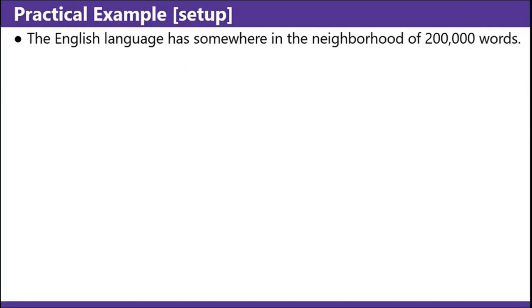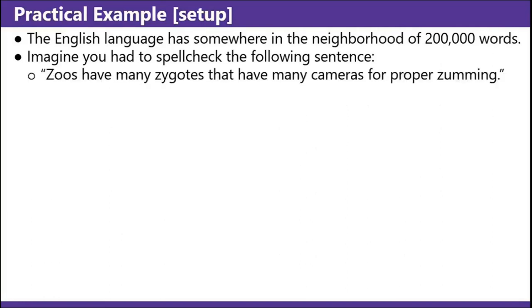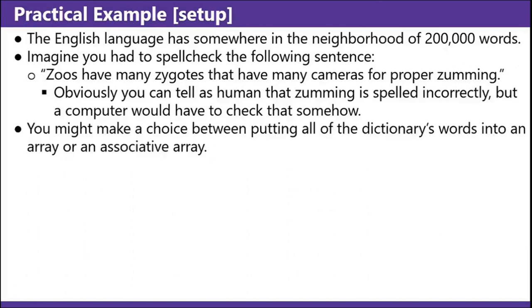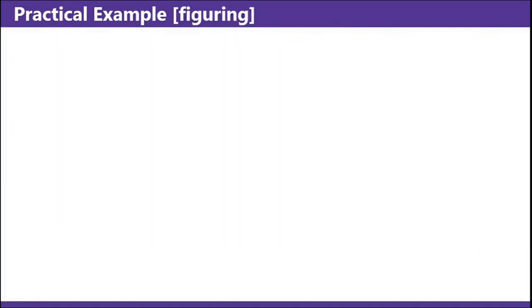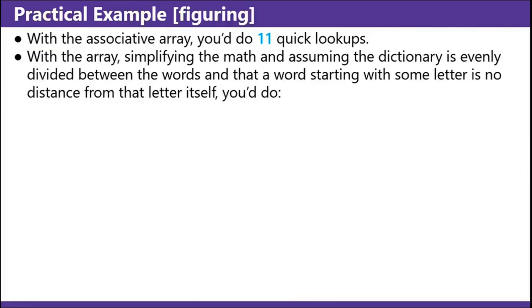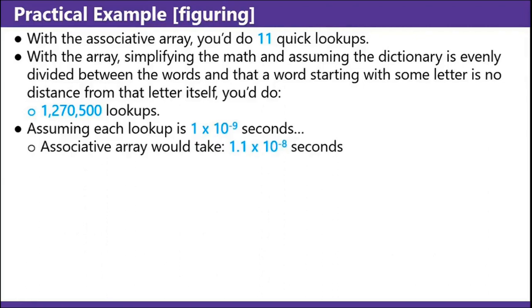Practical example: the English language has somewhere in the neighborhood of 200,000 words. Imagine you had to spell check the following sentence: 'Zoos have many zygotes. They have many cameras for proper zooming.' Obviously 'zooming' is spelled incorrectly. You might make a choice between putting all the dictionary's words into an array or an associative array. With the associative array, you do 11 quick lookups. With the array, you'd do 1,270,500 lookups. Assuming each lookup is a nanosecond, an associative array would take 1.1 times 10 to the negative 8 seconds, and an array would take 1.3 times 10 to the negative 3 seconds. Takeaway: how you store your data to solve a problem in computing is incredibly important.